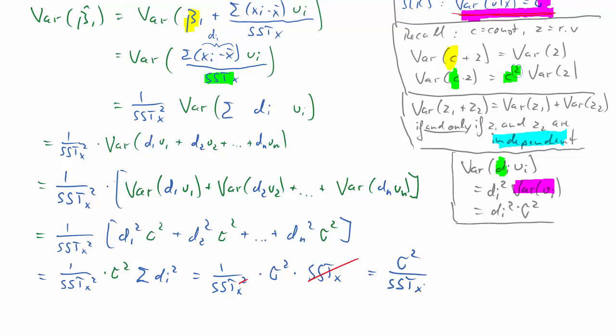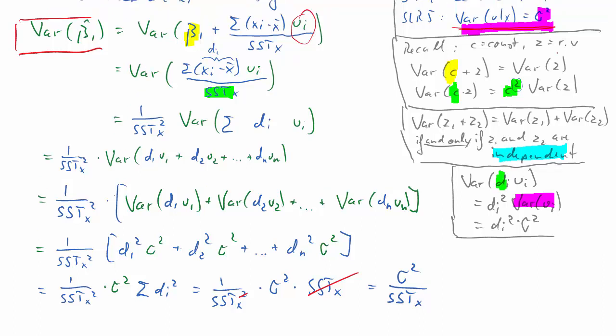So what we have done here, we have derived the variance of beta 1 hat, always recognizing this random variable due to the presence of ui. We then needed to know what the variance of ui was, that was sigma squared, and we ended up with the result we just derived.